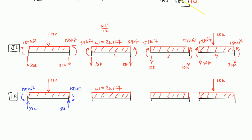For the second element, we have 2 kip per foot going down over 18 feet, so that's a total of 36 kips. That means we have 18 kips going up on the left and 18 kips going up on the right. And then you have your fixed-end moments with a value of 54 kip-foot and 54 kip-foot. Element 3 is the same as element 2, so you have a moment here and a moment here — they're both 54 kip-foot.